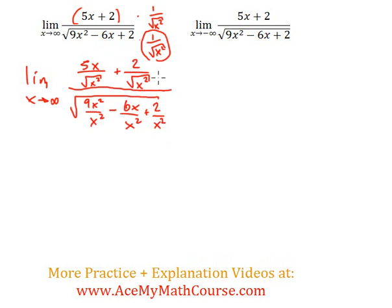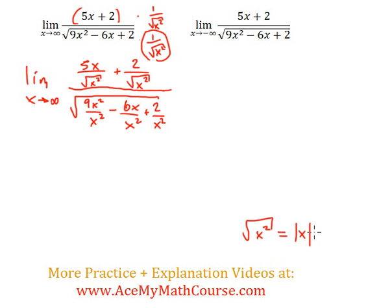Now I should mention something really important about this particular issue we're going to run into: the square root of x squared is the absolute value of x. If we write this as a piecewise function, it equals x when x ≥ 0, and negative x when x < 0.